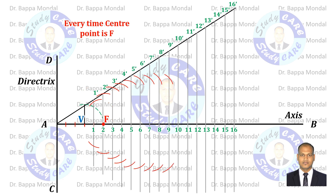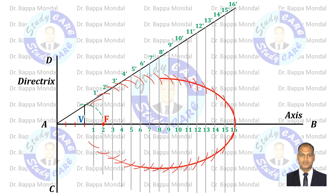Remember, during cutting, the center point will always be F. Then connect all the intersected points, so the ellipse will be drawn.